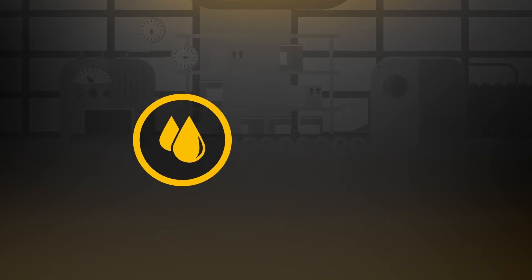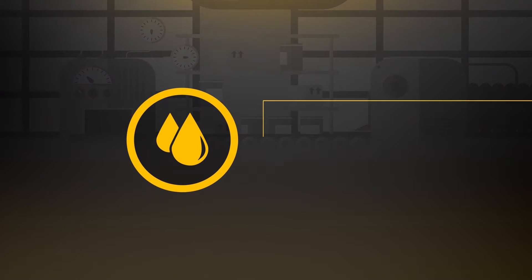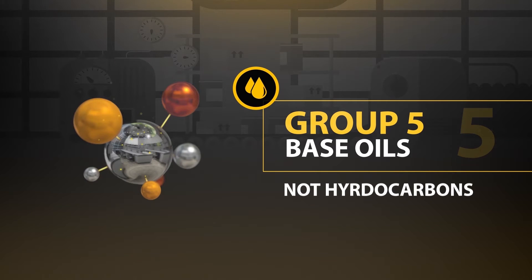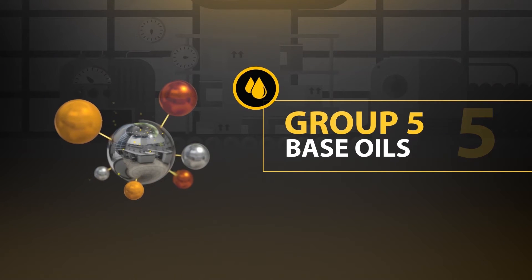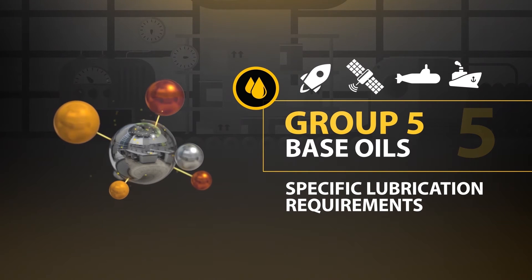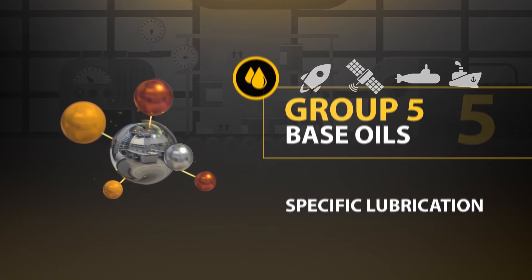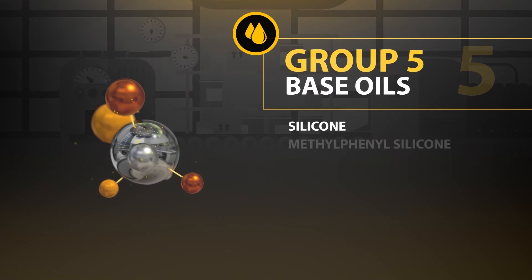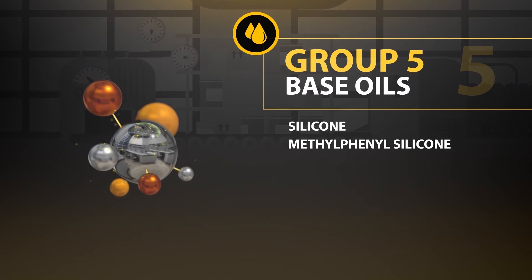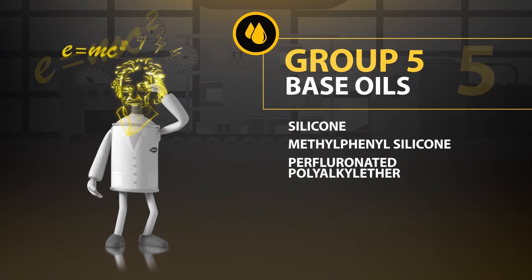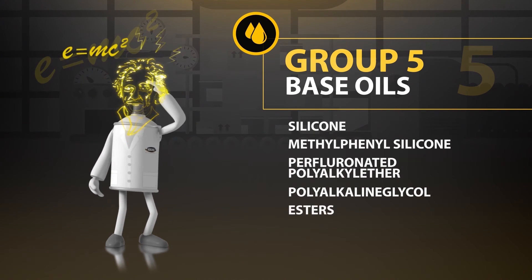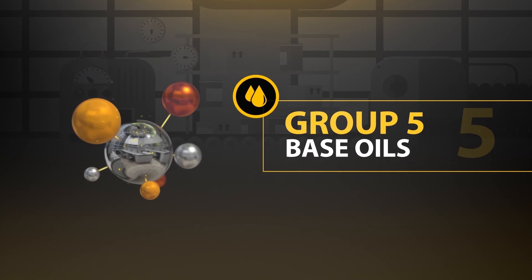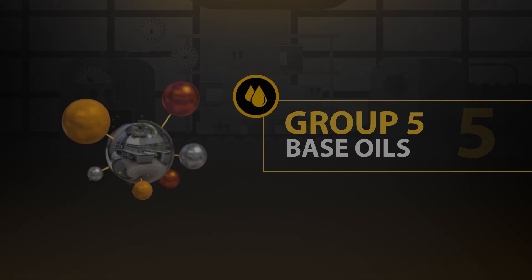All other oils fall into what's known as group 5 base oils. They are not hydrocarbons and are expensive. Group 5 base oils offer very specific lubrication requirements and include silicone, methylphenyl silicone, perfluorinated polyalkyl ether, polyalkaline glycol and esters, which have excellent if not superior vapor pressure and oxidation stability and lubricity compared to mineral oil.